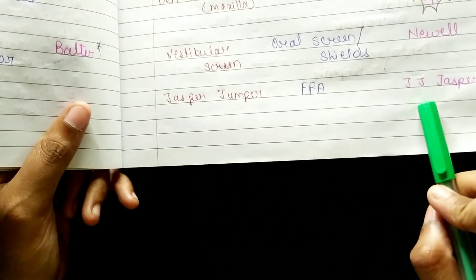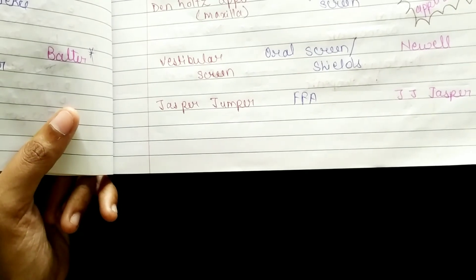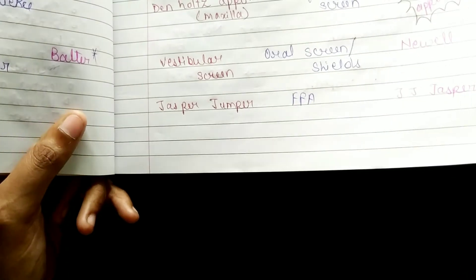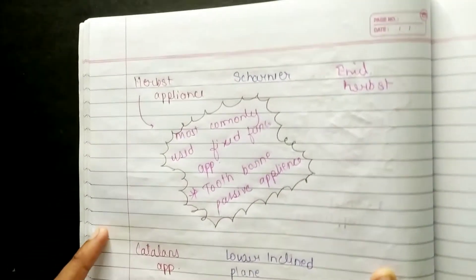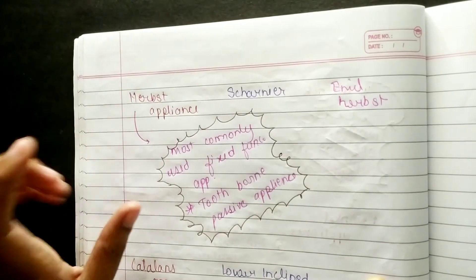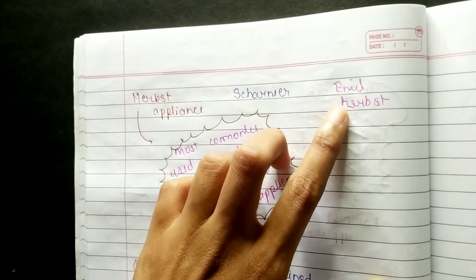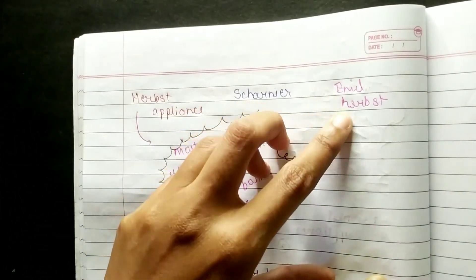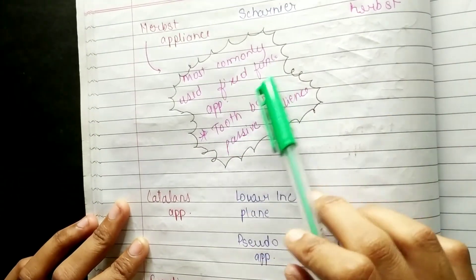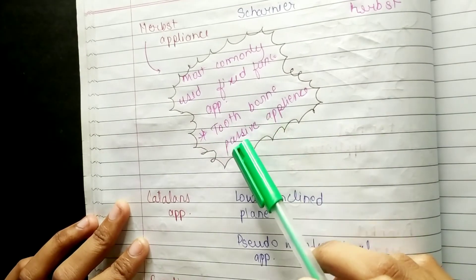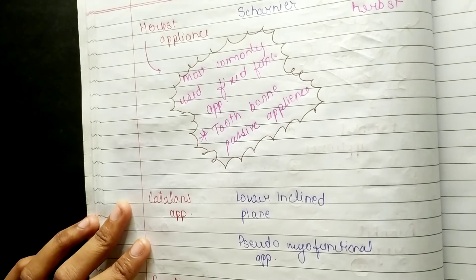The Jasper Jumper is a fixed functional appliance, abbreviated as FFA or JJJ. Jasper and Carnier discovered it. The Herbst Appliance, discovered by Emil Herbst, is the most commonly used fixed functional appliance. It is also a tooth-bonded passive appliance.